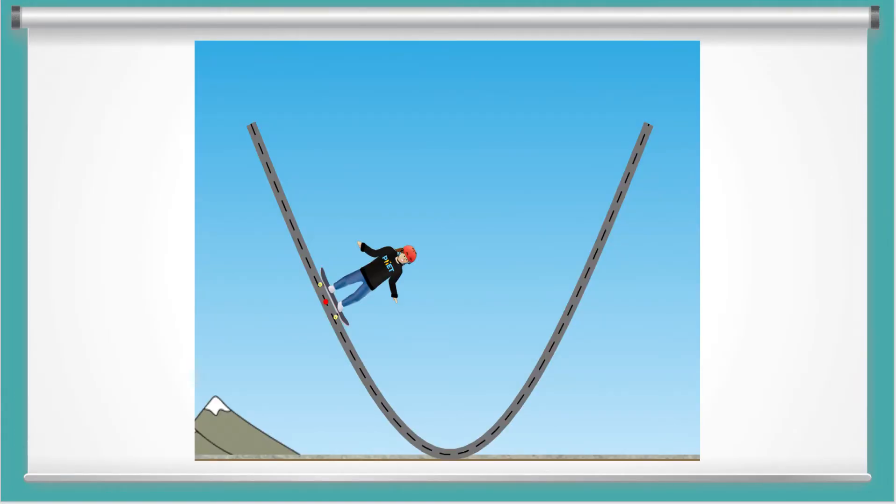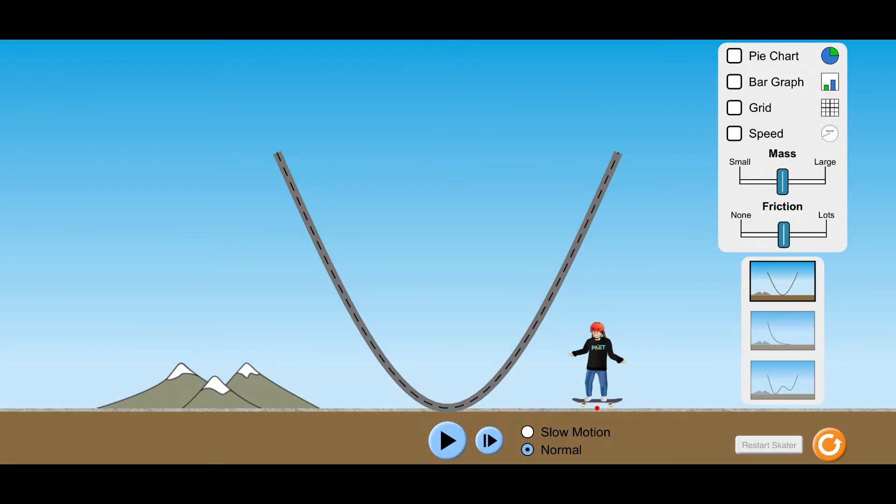So let's take these ideas of friction and thermal energy back to our skateboarder. And we can see what happens when there's potential energy, kinetic energy, and thermal energy all in one. All right, so we're back to our skateboarder. I'm remembering our ramp here and our skateboarder here.